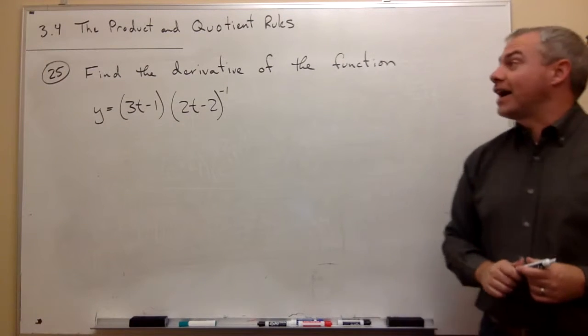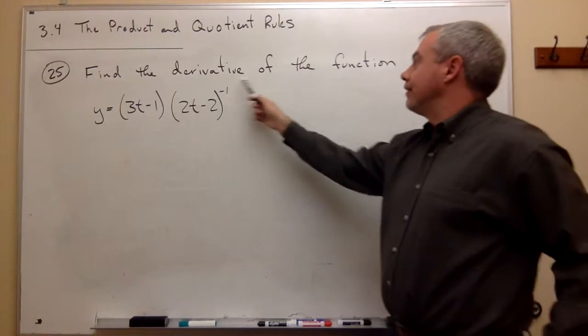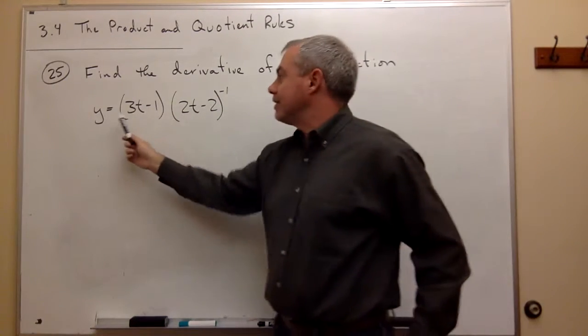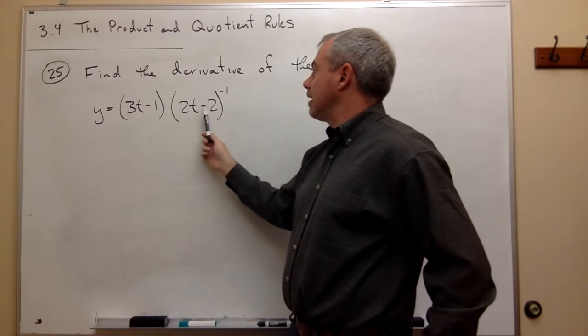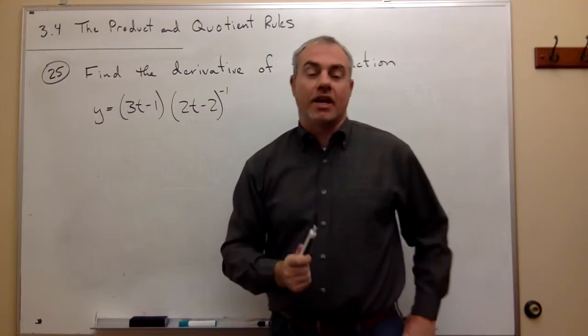In problem number 25, we'd like to find the derivative of the function y equals 3t minus 1 times 2t minus 2 raised to the negative 1 power.